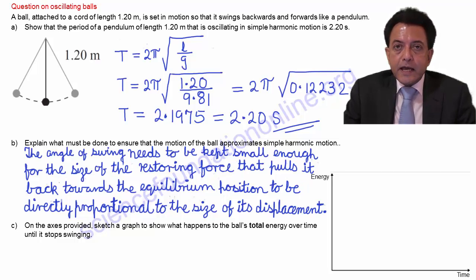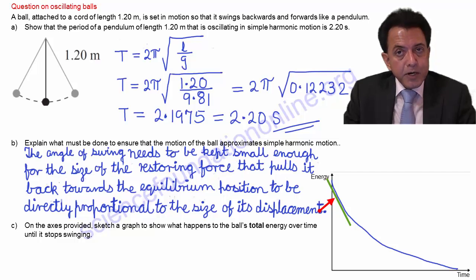Because this is an energy against time graph, the size of the slope represents the rate of energy loss. Because energy is being lost, energy decreases with time and this makes the slope negative. So we start drawing this with the largest negative slope initially when its speed is fastest, and that's when it loses energy at the fastest rate.